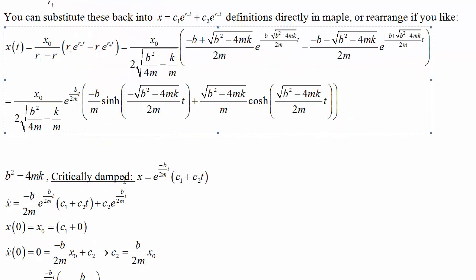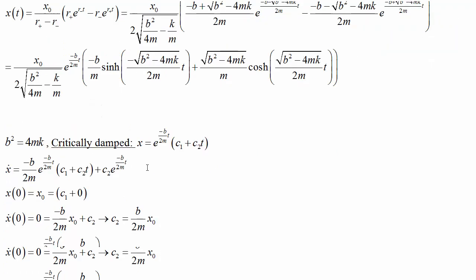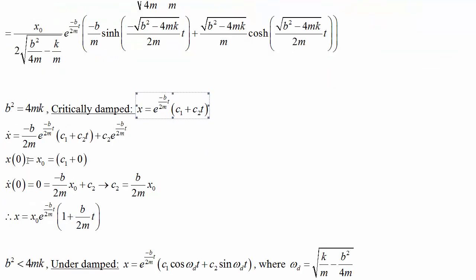If we've got a critically damped mass spring situation, so the damping is just the right kind to give us this product of an exponential and the linear term that we got from reduction of order, then applying our initial conditions gives us this set of solutions.